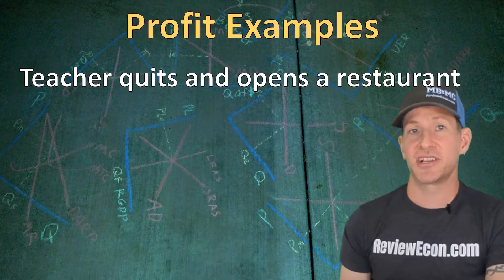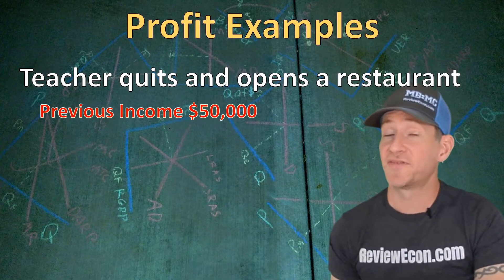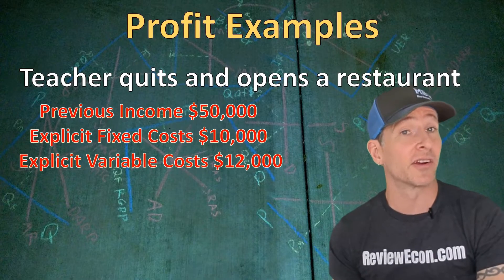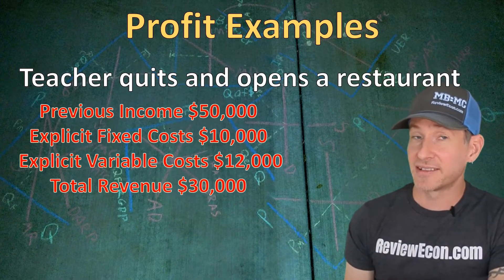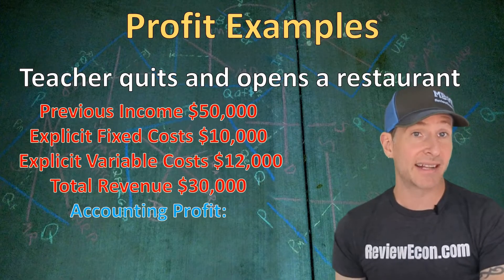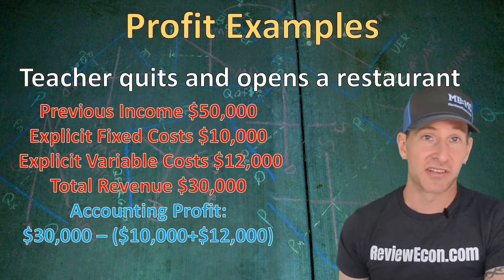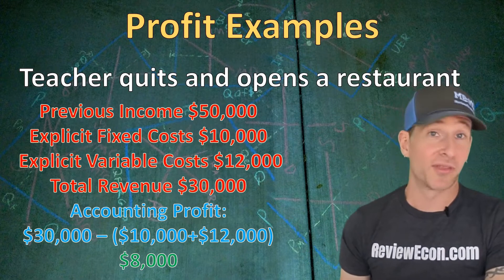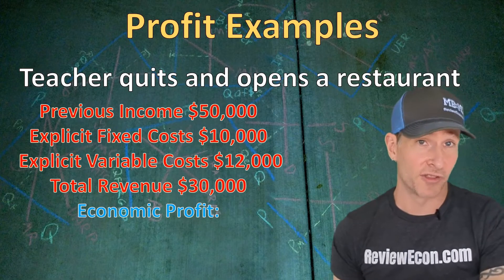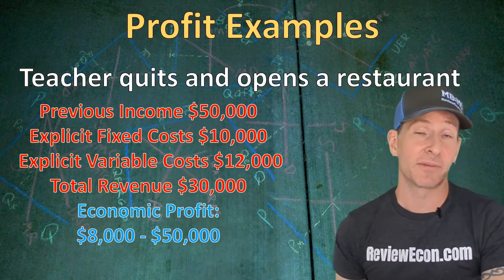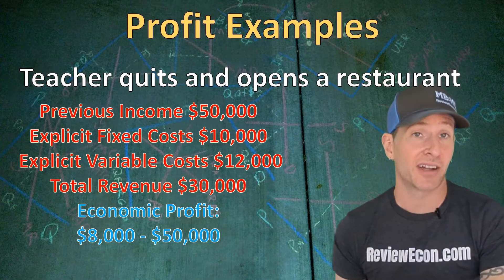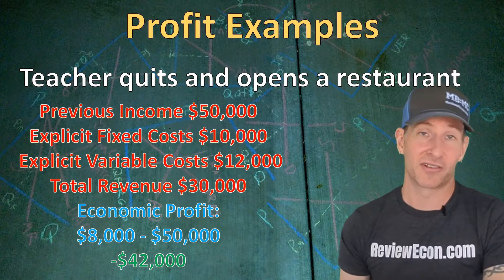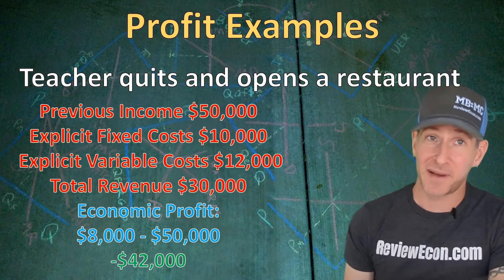For example, a teacher quits teaching to open up their own restaurant. Their previous salary was $50,000, their explicit fixed costs are $10,000, their variable explicit costs are $12,000, and their total revenue is $30,000. Accounting profit is total revenue minus explicit costs: $30,000 minus $22,000 equals $8,000. To find economic profit, we take that $8,000 of accounting profit and subtract the $50,000 implicit cost, giving us negative $42,000 — a huge economic loss despite the positive accounting profit.